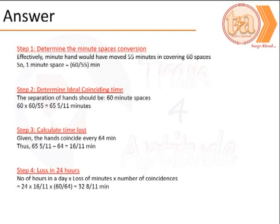In an ideal coinciding time, the separation of the two hands has to be 60 minute spaces. That is, they both coincide after 60 minute spaces, which is equivalent to 65 by 11 minutes.